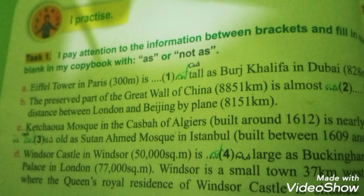The answers for task one — all of them: A is 'is not as tall as,' B is 'is almost not as long as,' C is 'is not as old as,' and D is 'is not as large as.'